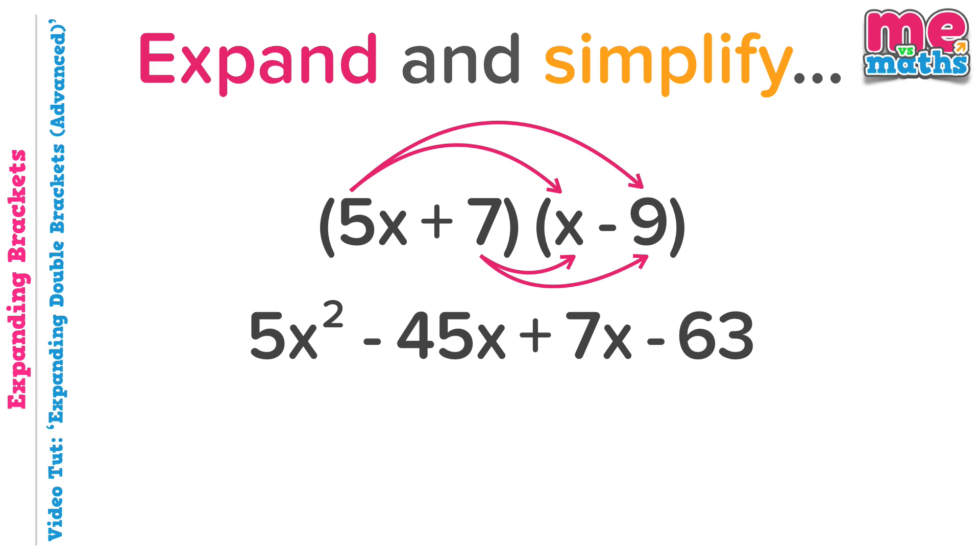Now, we'll simplify those terms in the middle, minus 45x plus 7x. 45 below 0, and go up 7. We'll get to minus 38x. So our final solution, 5x squared, minus 38x, minus 63.